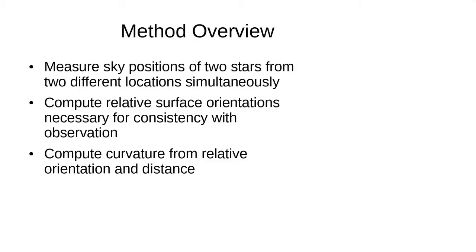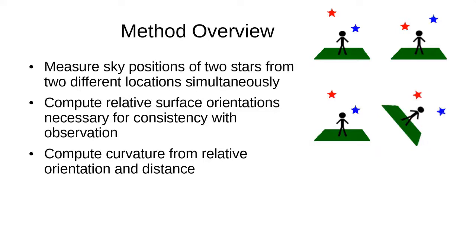So, the method we will use is to measure the positions in the sky of two stars from at least two locations at the same time. We will then compute a relative surface orientation that is necessary so that those observations are consistent with each other. And from that relative orientation, we will then compute the curvature and therefore the radius once we also know the distance between those two locations.